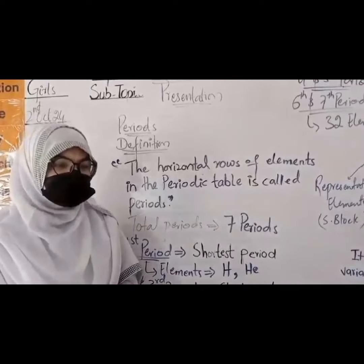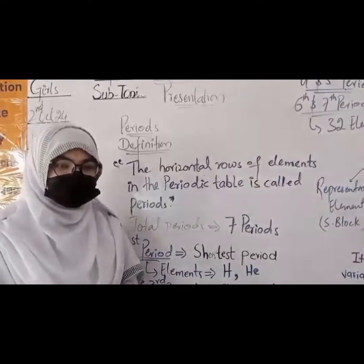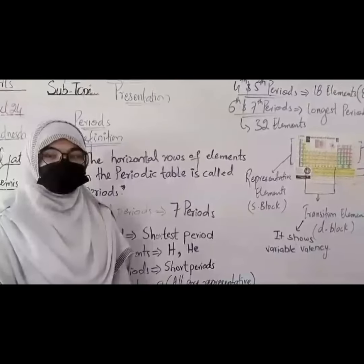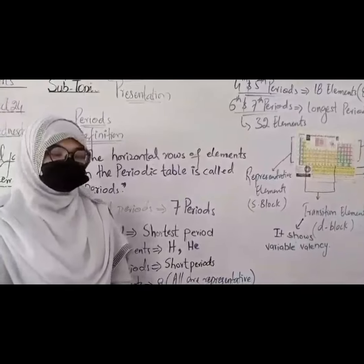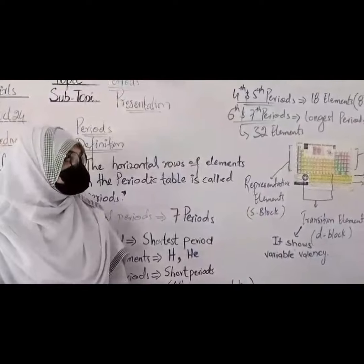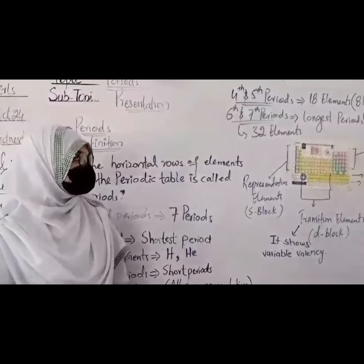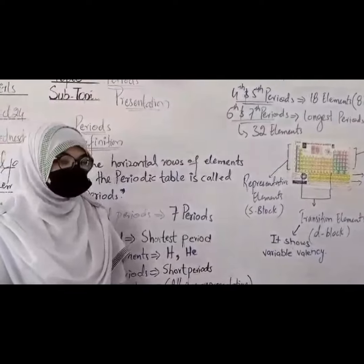Which is the shortest period in the periodic table? — The first period is the shortest period in the periodic table. Excellent, Jovia. Which one is the longest period in the periodic table? — The sixth and seventh periods are the longest periods in the periodic table, which contain 32 elements.